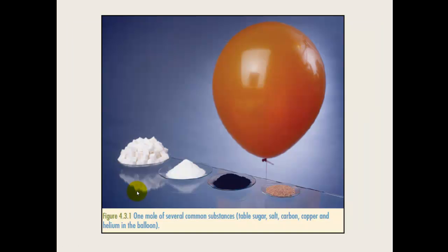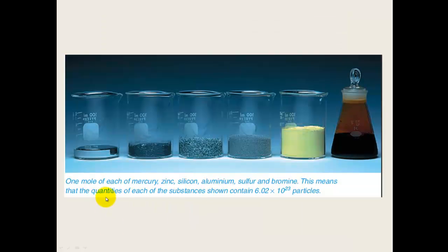Here are some examples of one mole of several common substances. We have one mole of table salt (sodium chloride, NaCl), one mole of carbon, one mole of copper, and one mole of helium in a balloon — you can see how they are different quantities by mass. The number of atoms in all of those is the same. Similarly, a mole of mercury, zinc, silicon, aluminium, sulfur, and bromine are different amounts by weight but contain the same number of particles — each contains 6.02×10²³ atoms, but they weigh different amounts based on their different relative atomic masses.